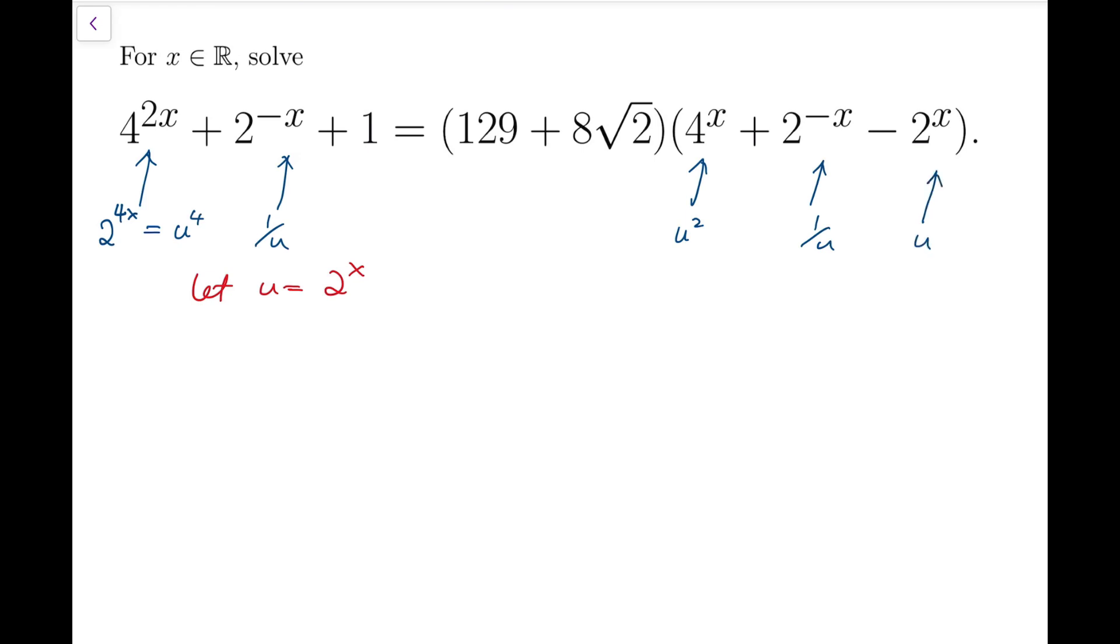So the equation becomes u to the 4 plus 1 over u plus 1 equals this number times u squared plus 1 over u minus u.